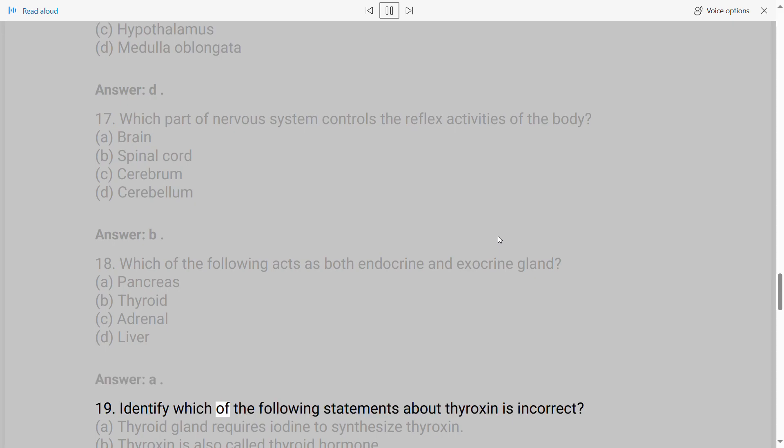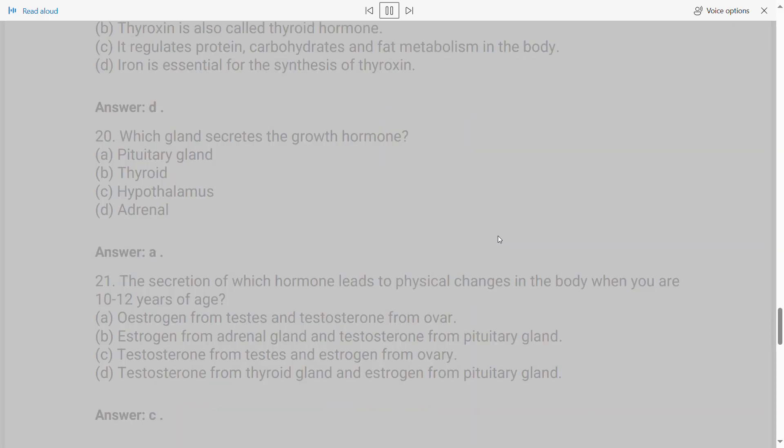19. Identify which of the following statements about thyroxin is incorrect? A. Thyroid gland requires iodine to synthesize thyroxin B. Thyroxin is also called thyroid hormone C. It regulates protein, carbohydrates, and fat metabolism in the body D. Iron is essential for the synthesis of thyroxin. Answer: D.